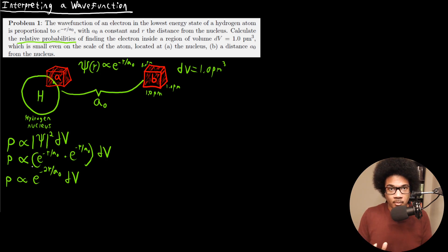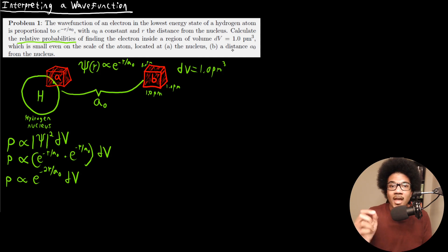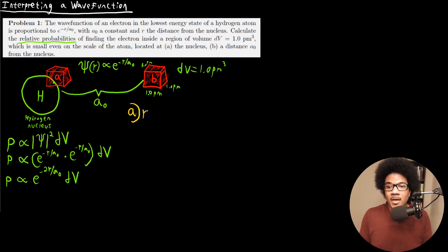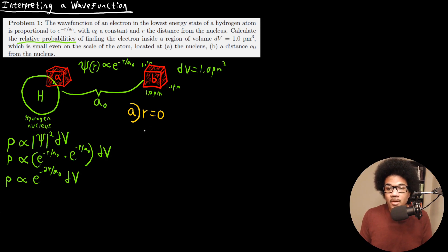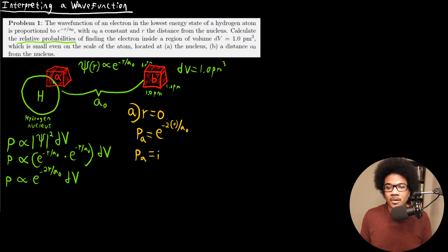Now we have a probability distribution. We want to plug in for the two cases: the electron at the nucleus and at distance a-naught. For part A, if the electron is located at the nucleus, then r equals zero, because r is the distance from the nucleus — if it's at the nucleus, there is no distance. Plugging that in, the probability for A equals e to the negative 2 times 0 over a-naught, which is just e to the 0. So the relative probability for A is 1.0.